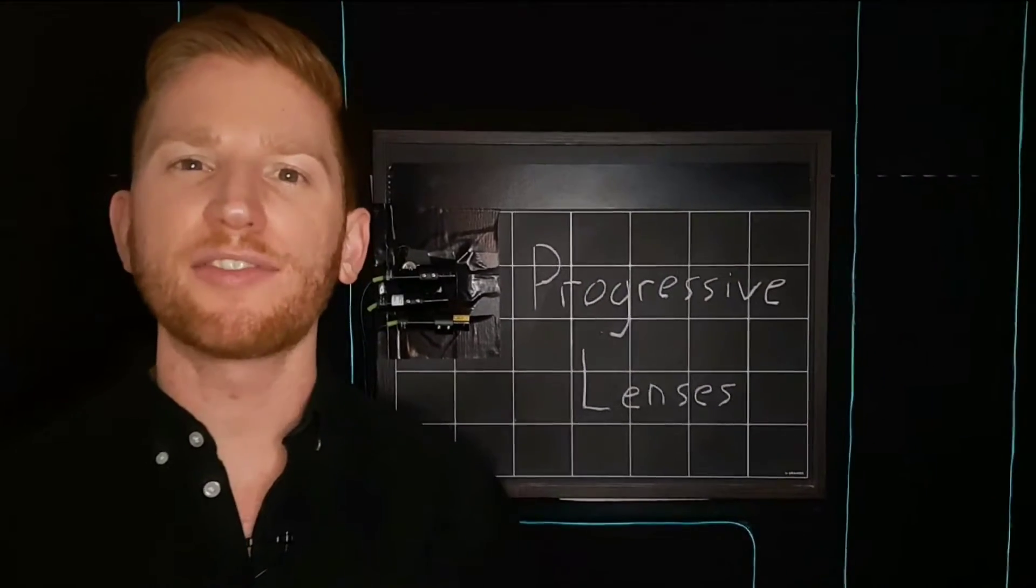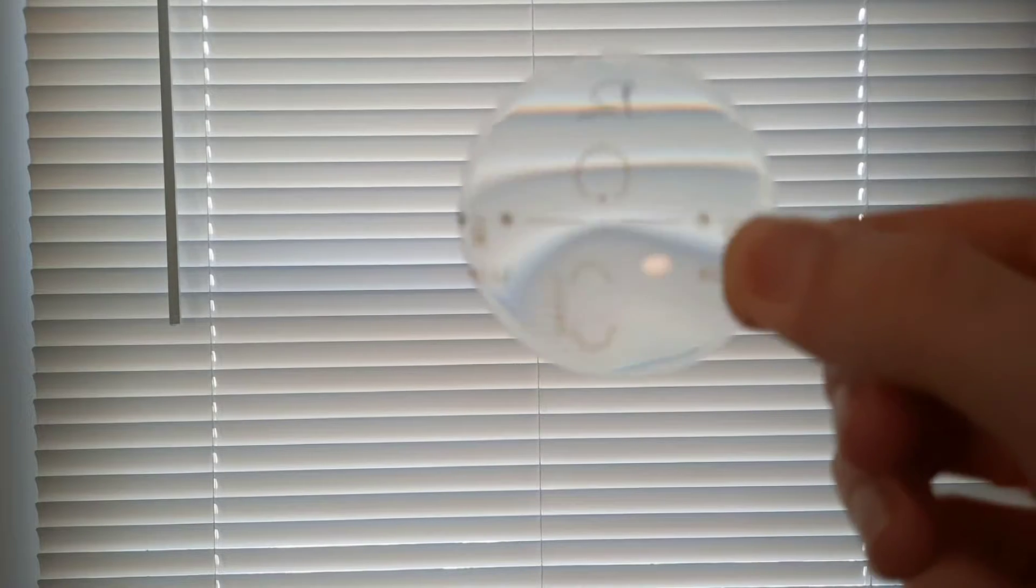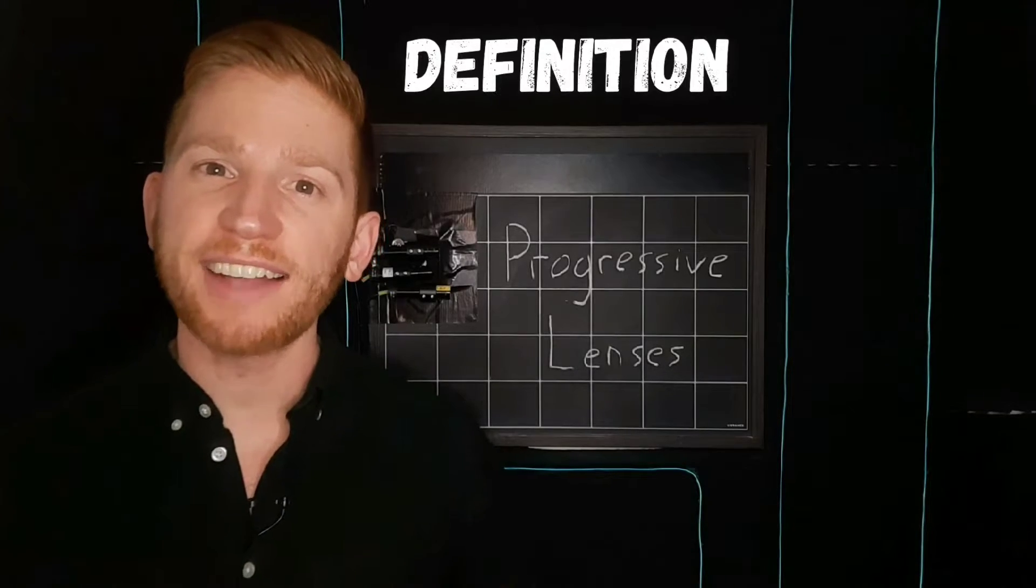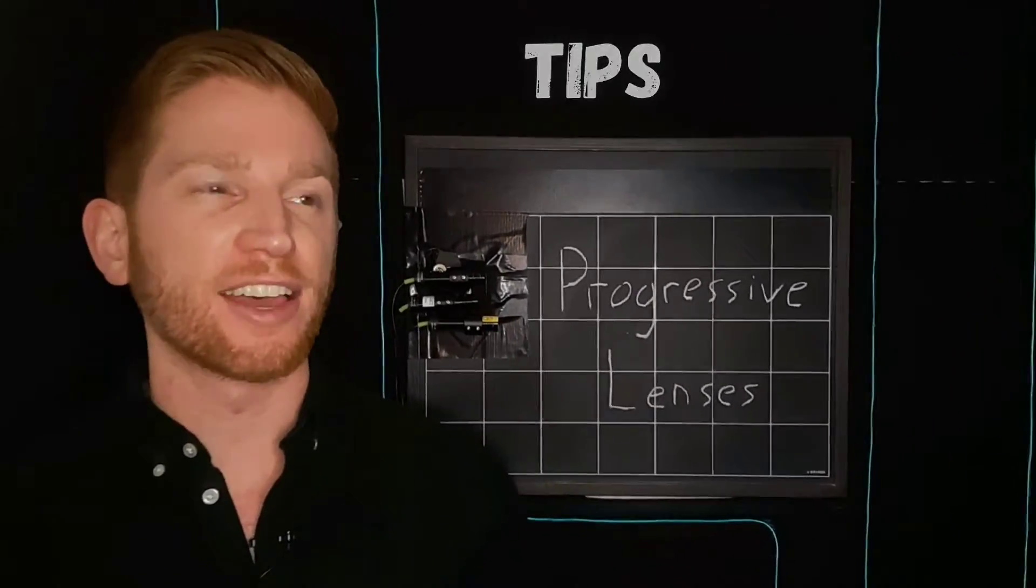Progressive lenses help you see well in a lot of different situations by bending light differently across different parts of the lens. I'll break down what exactly progressive lenses do, their pros and cons, and some tips for getting used to wearing them.